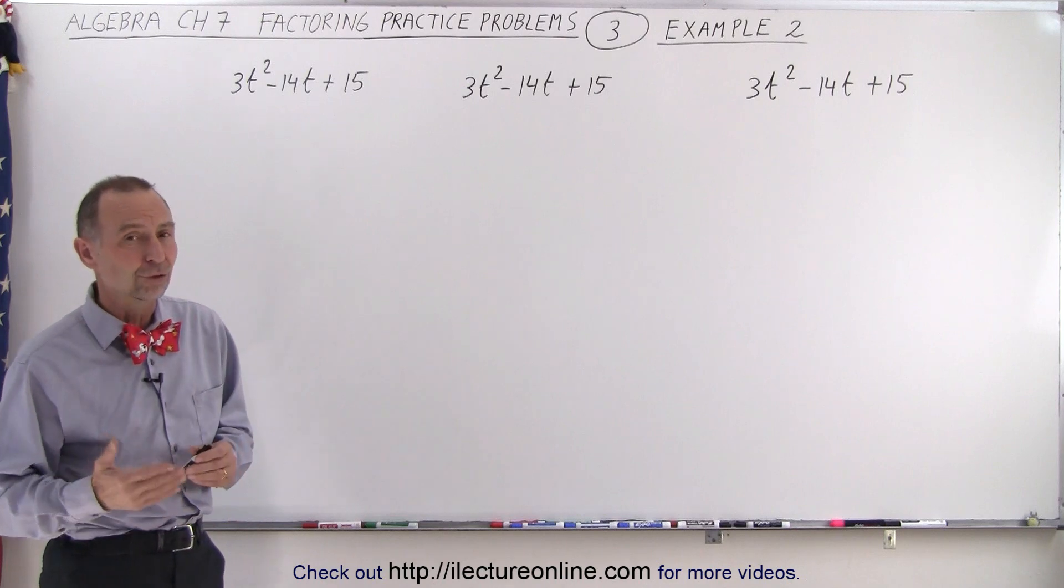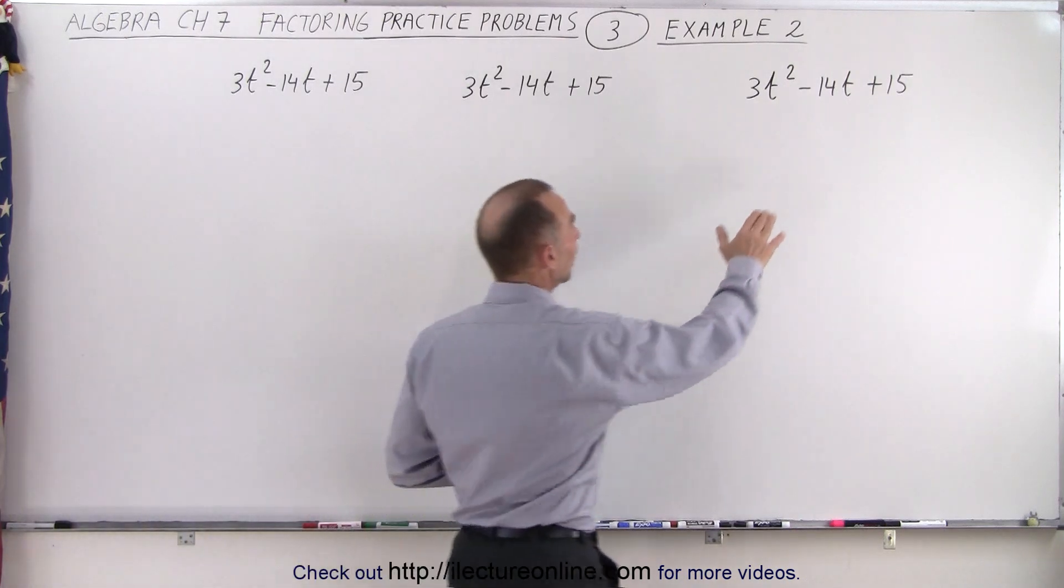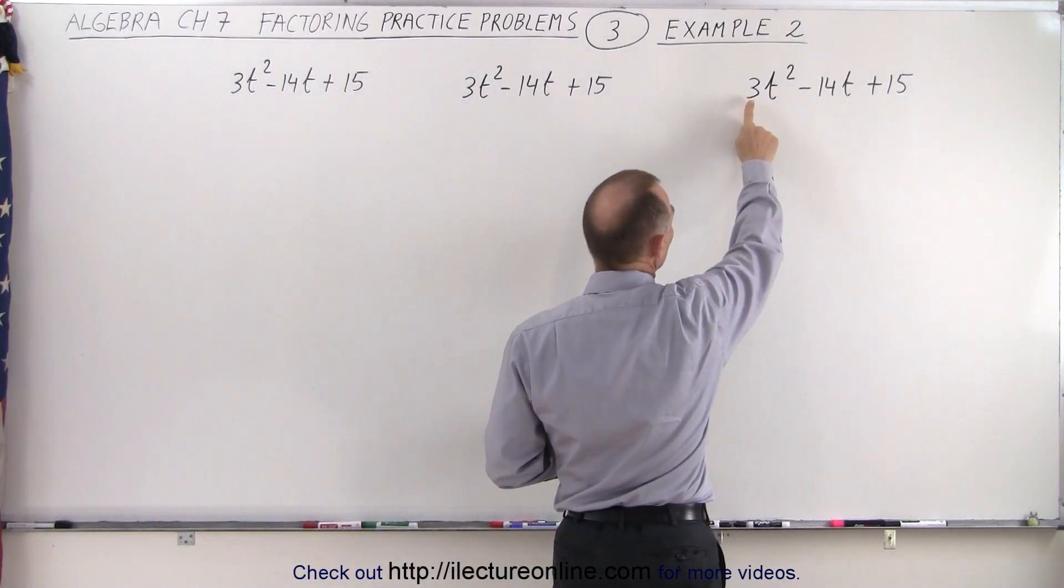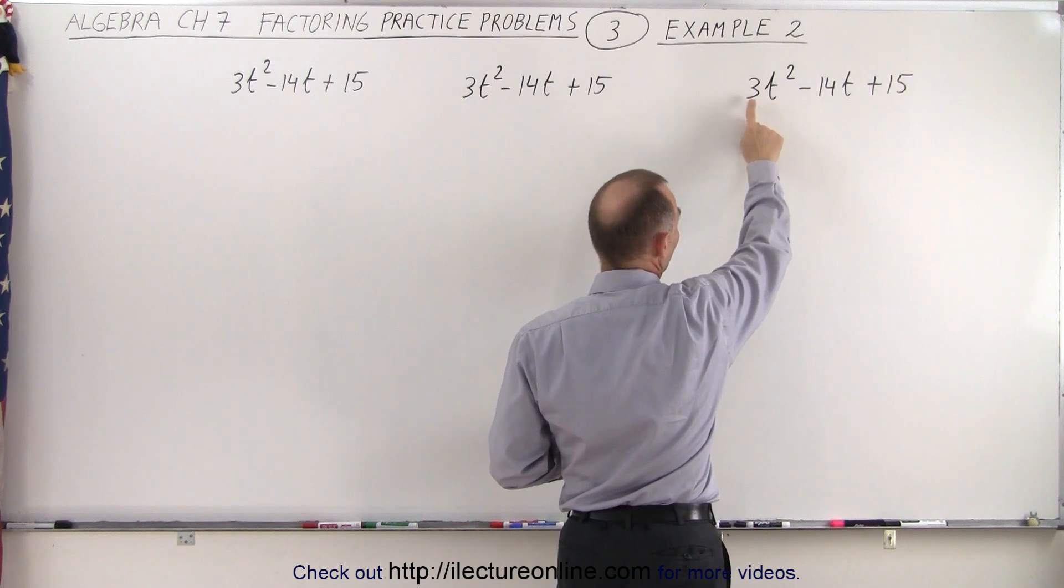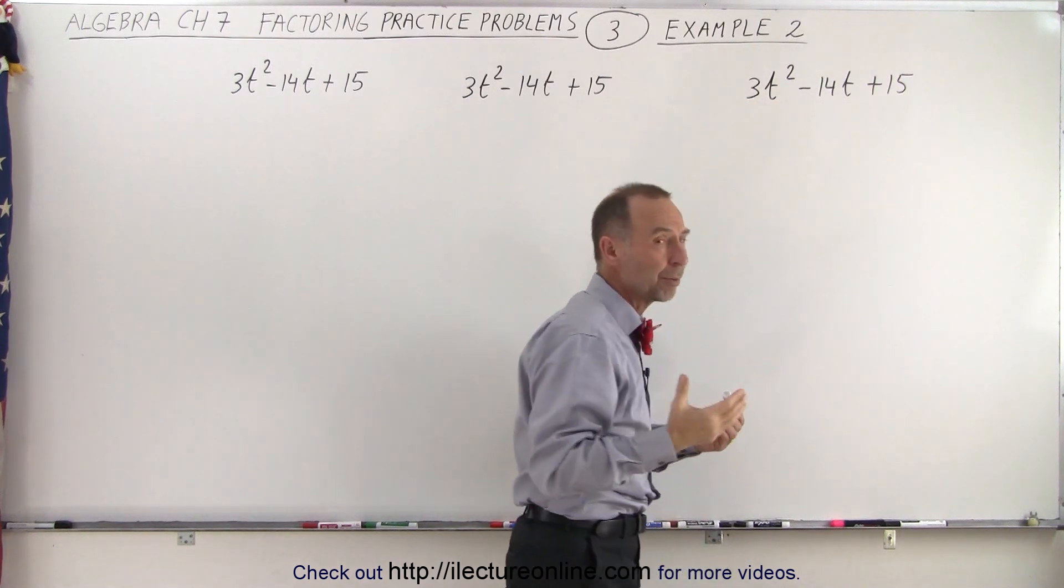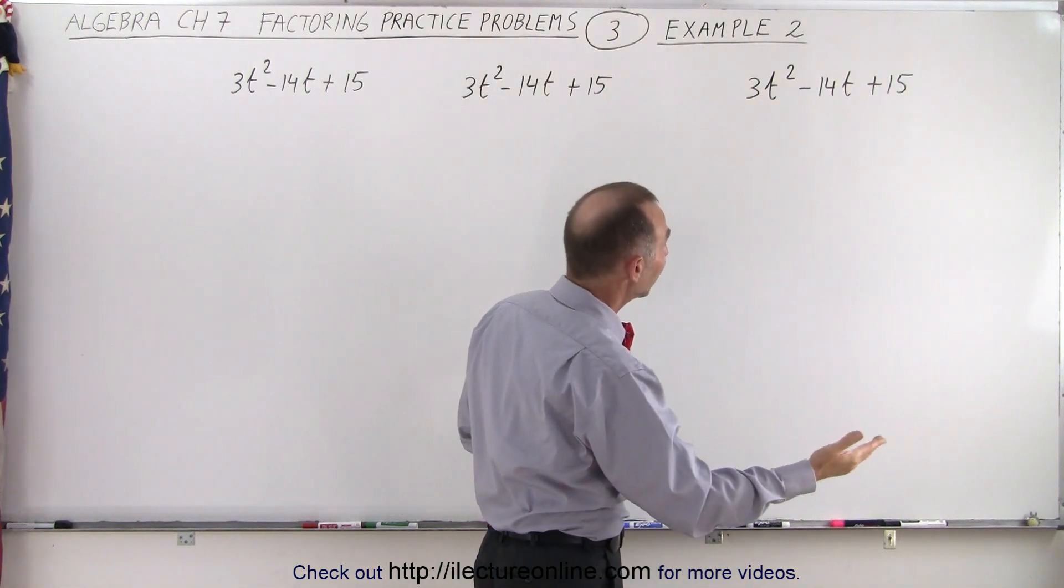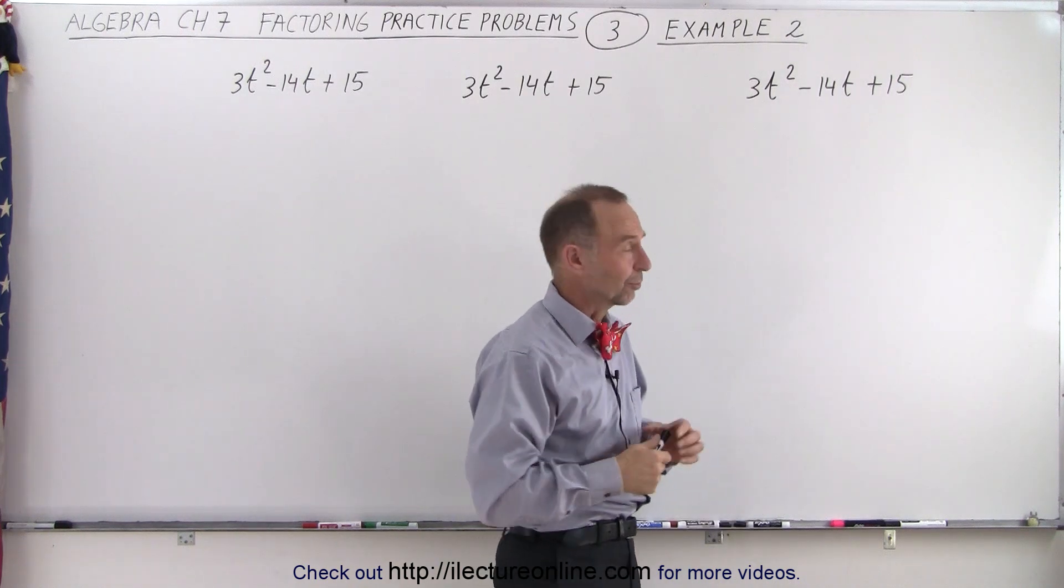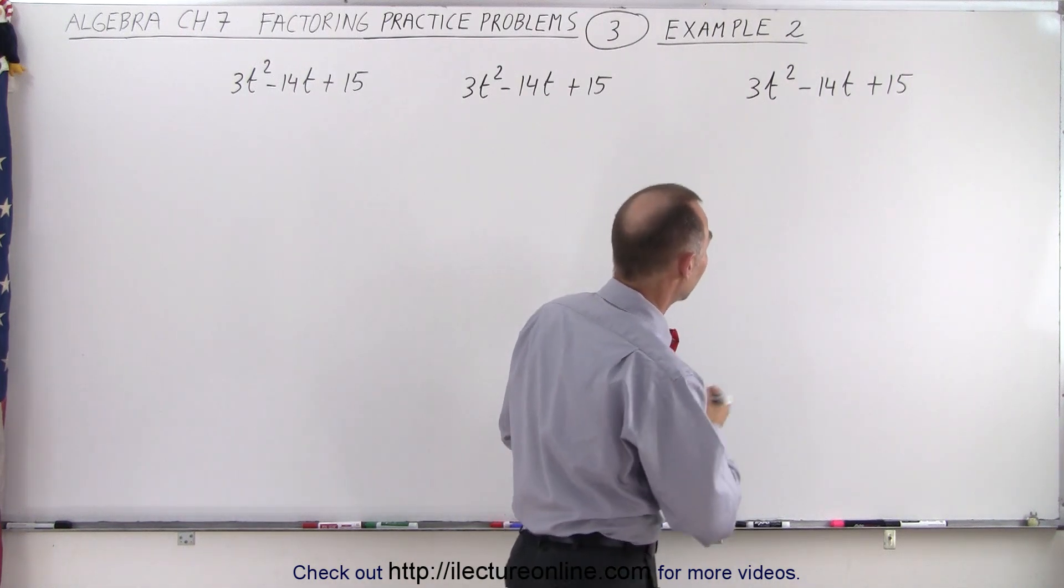So let's go ahead and try our first way. When we see something like this, first of all we have a number in front of the square term, 3t squared, which makes things a little bit more difficult. And notice we cannot factor out a common factor, we're stuck with what we have.